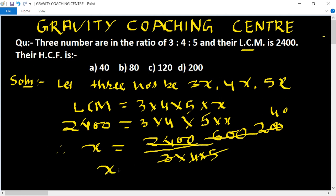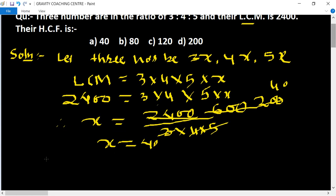So now all three numbers. The three numbers are 40 into 3, 40 into 4, 40 into 5.